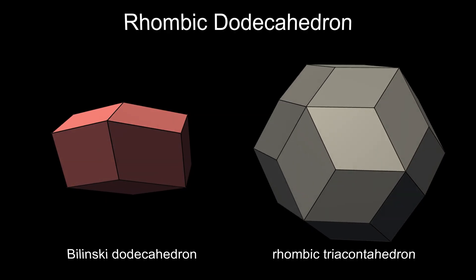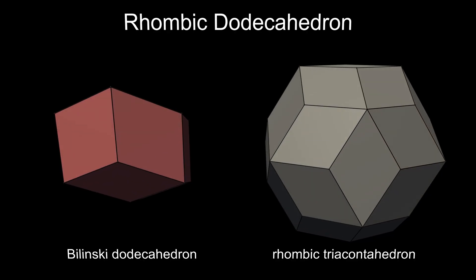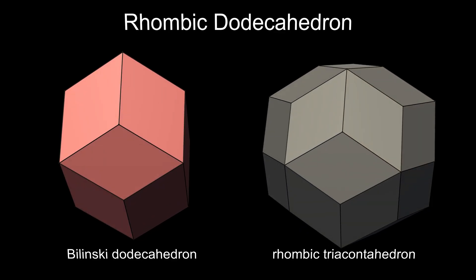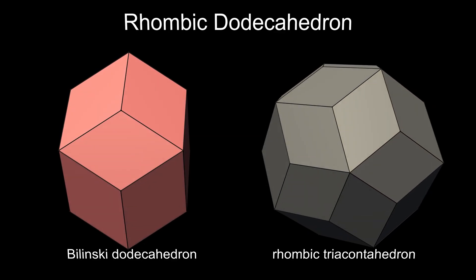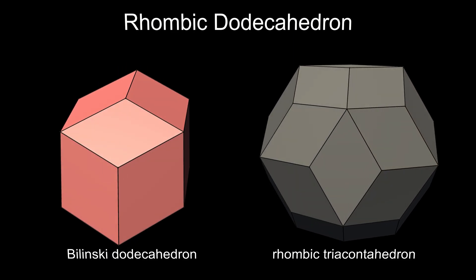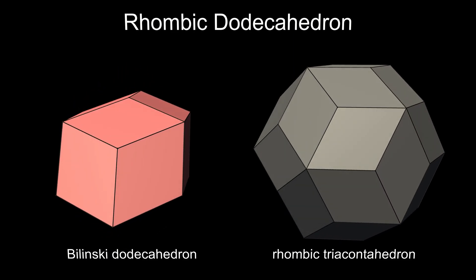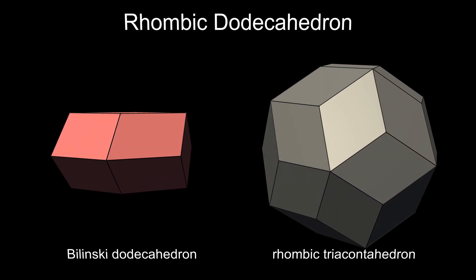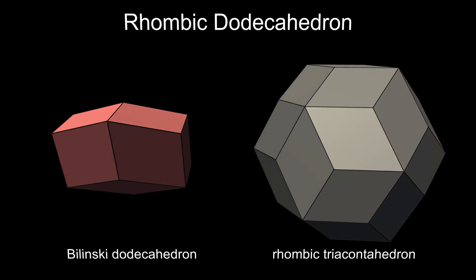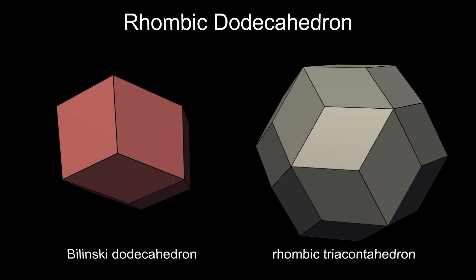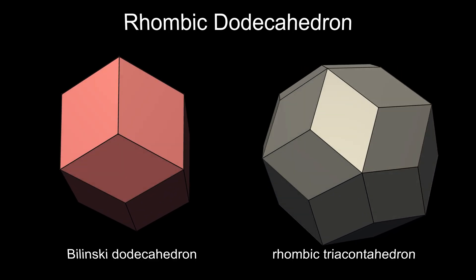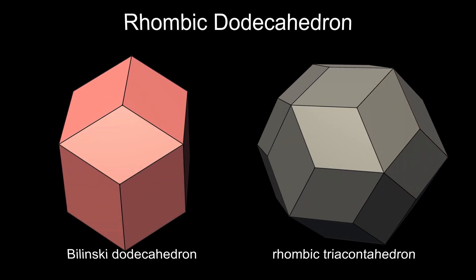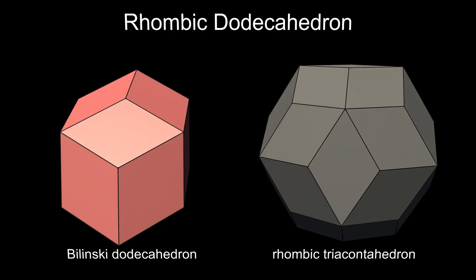And to finish, here are two related polyhedra. The Bilinski dodecahedron is another solid with 12 rhombic faces. It is topologically the same as the rhombic dodecahedron, but the rhombuses are golden rhombuses — their diagonals are in the golden ratio. Its faces are identical, but it is not face transitive. And the rhombic triacontahedron is the only other Catalan solid with identical edges, being the dual of the other quasiregular solid, the icosidodecahedron. Its faces are 30 golden rhombuses.